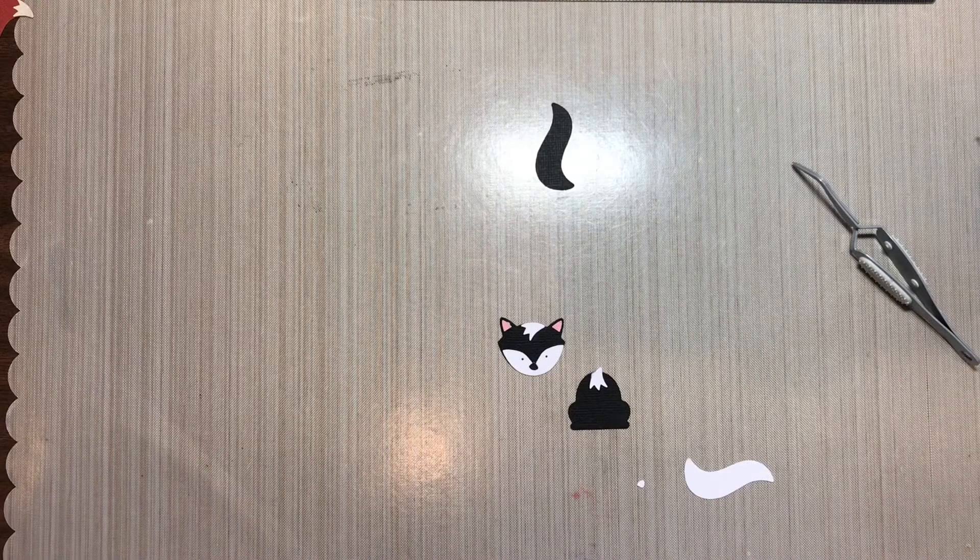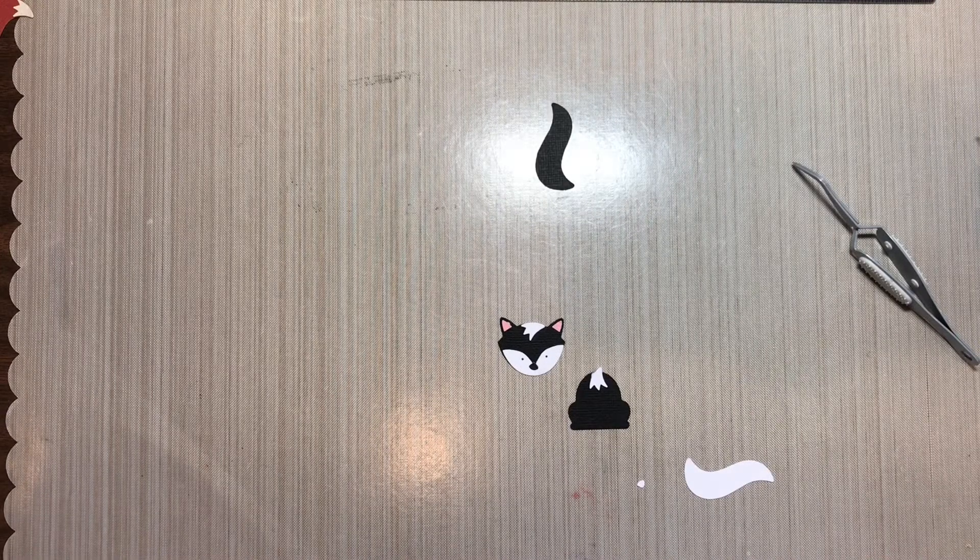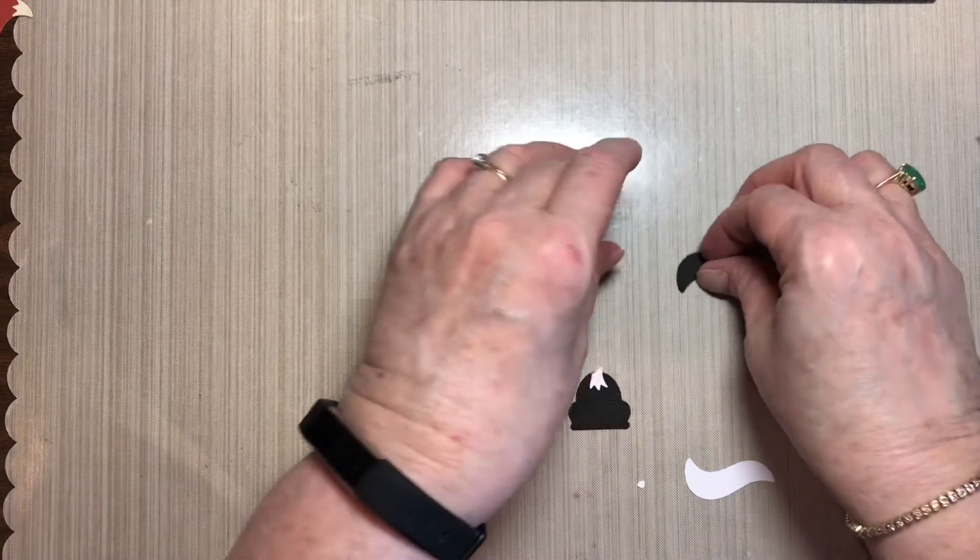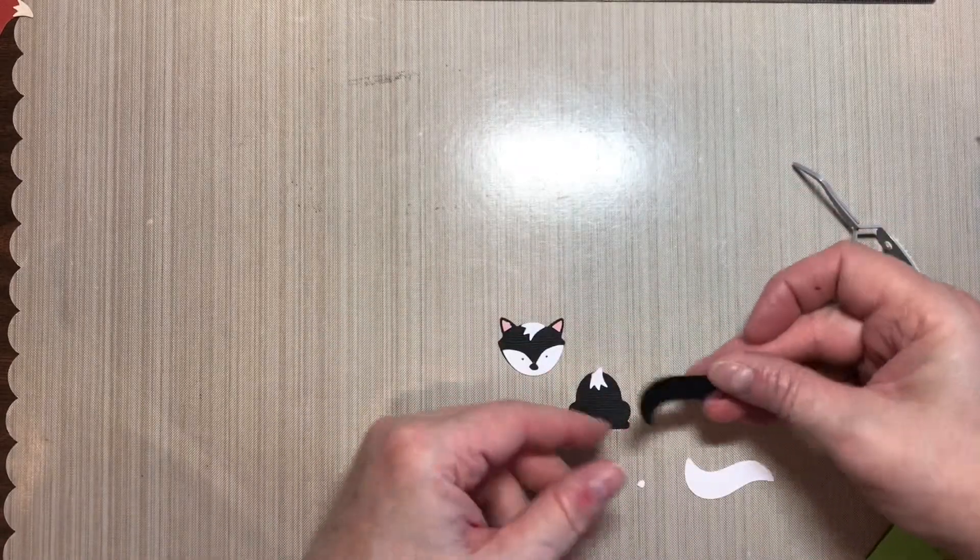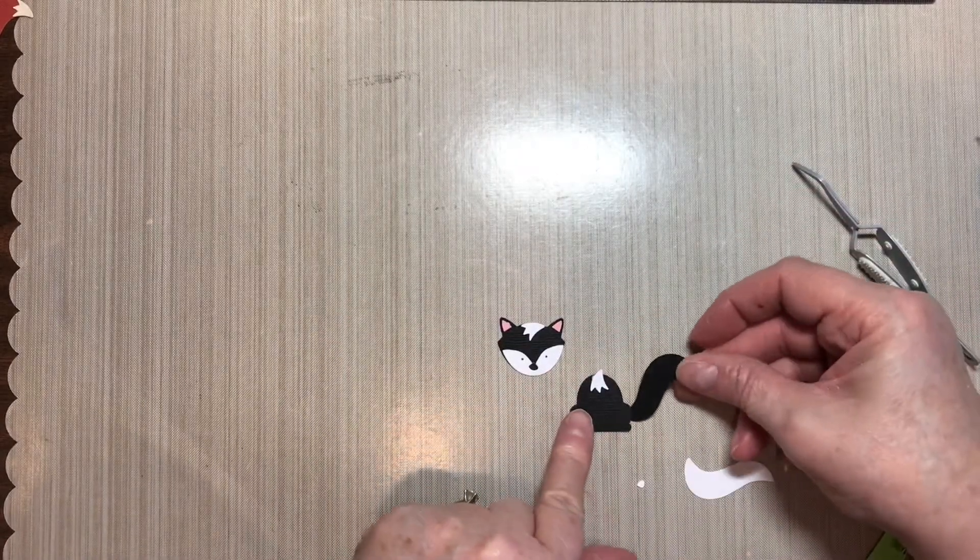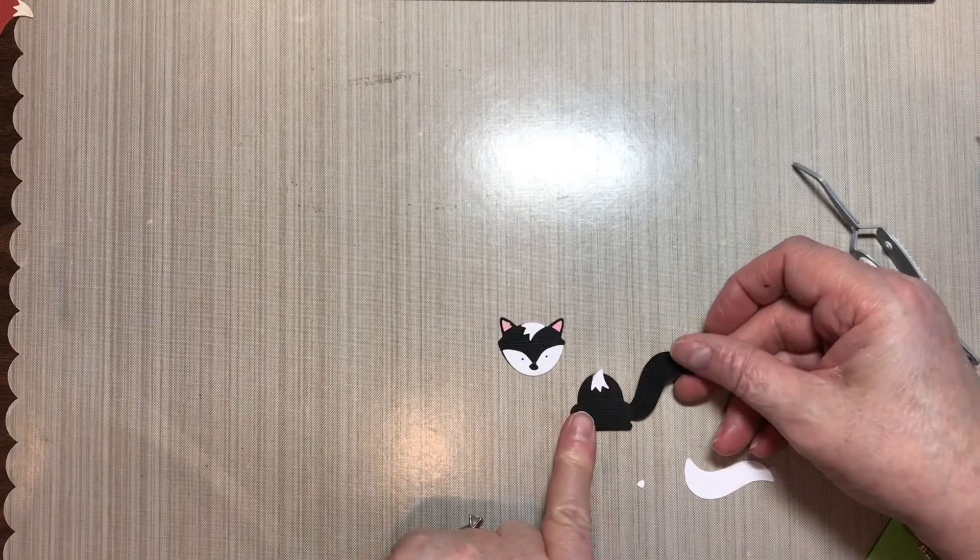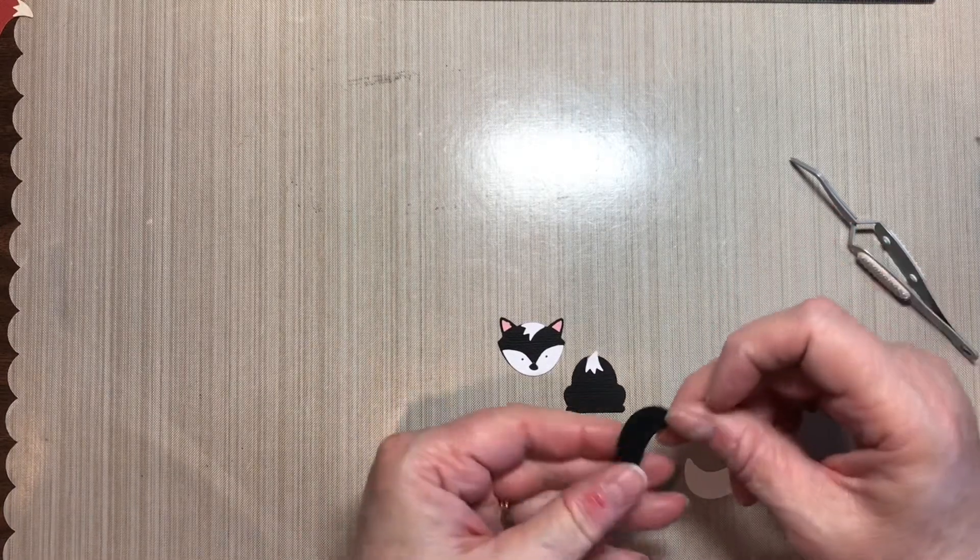The next part that is a little bit different is his tail. You need to, again, first off, decide what direction you want his tail going. I'm going to choose to have it go this way.